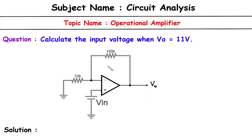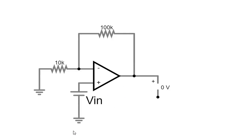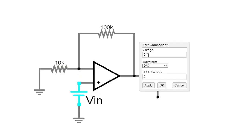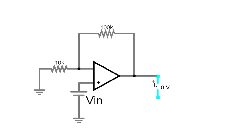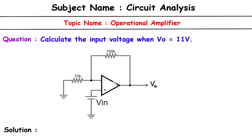First, we will solve this circuit to get the value of Vin, the input voltage, and after that we will verify our answer in the simulator app. Currently the Vin value is 0V in the simulator, and we have to find the Vin voltage that gives Vo equal to 11V. We will first use circuit analysis and then check the answer in the simulator.